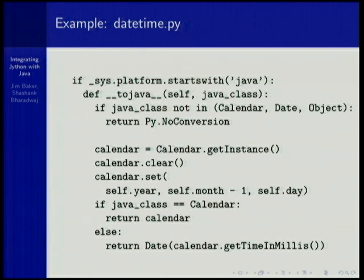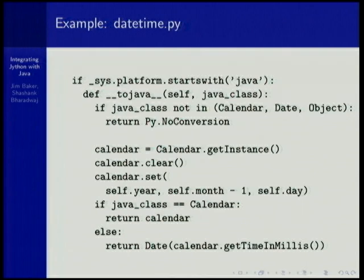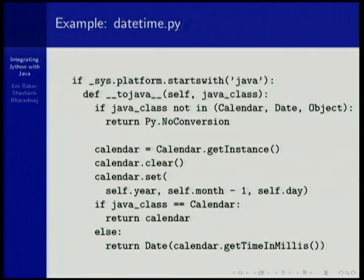I mention `toJava` here because you may be in the example where you've written some library and you want to have nice transparency between the Python side and the Java side. An example of this is what was implemented in `datetime`. You can see `toJava` is the method you need to define for this particular type. It uses one of the worst classes in Java's standard library — the Calendar class, whose author freely admits he made a serious mistake in making datetime types mutable. Calendar clear? Calendar set? No — it should have been in the constructor all along.